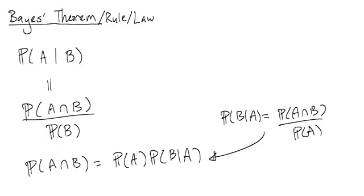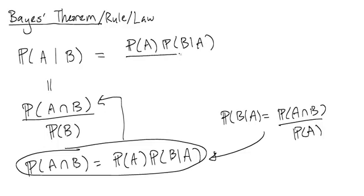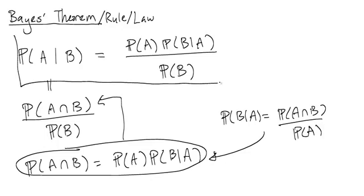But now notice that if I plug in this equation here — so this is the product rule — into the numerator, then I get the probability of A times the probability of B given A, all divided by the probability of B. And this thing here is Bayes' theorem, or rule, or law.